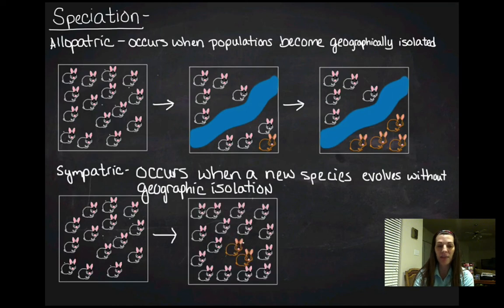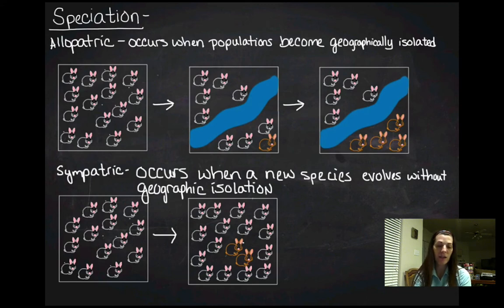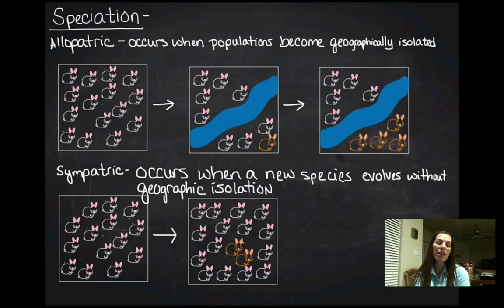Within the population, some new mutation arises. For some reason, that mutation persists but doesn't spread evenly throughout the population. With bunnies, you might think it would just spread out, but there may be sexual selection at play — maybe brown bunnies only want to mate with other brown bunnies. If that's the case, the brown bunnies would always be reproducing with organisms that already carry that mutation. So sexual selection could lead to sympatric speciation.